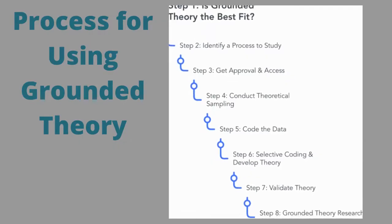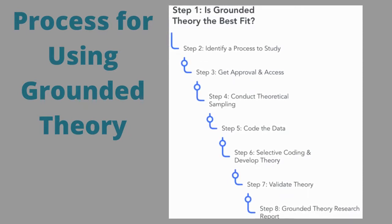The steps or procedures for grounded theory are shown here. The first step is to decide if grounded theory is the best fit for the social phenomenon to be researched. Next, the researcher needs to identify a process or action to study, followed by step three which involves getting approval for the research process. The fourth step is conducting the interviews and other methods of theoretical sampling. While data is being collected, the researcher must code the data in step five.